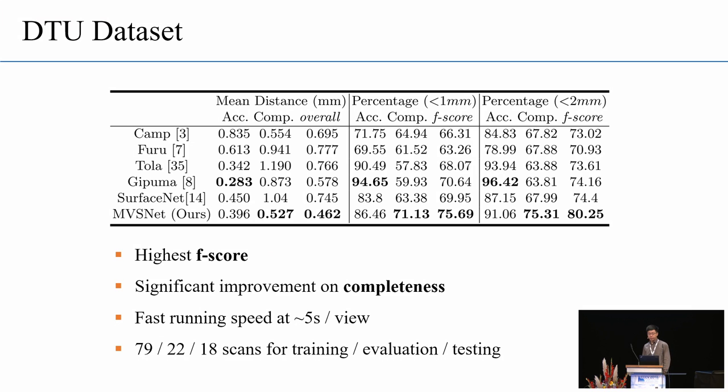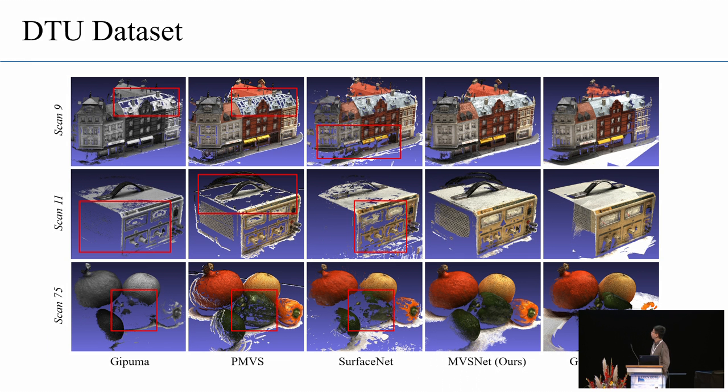For the experiment, we have trained and benchmarked MVSNet in the DTU MVS benchmark. And we split the dataset into training, evaluation, and testing sets. In the evaluation dataset, MVSNet achieves the highest F-score compared to other methods. And it is noteworthy, we got significant improvement in the reconstruction completeness. And also, our method runs in the fastest speed at around 5 seconds per view. And here is the qualitative result of MVSNet. And our method generates the most complete result compared to other methods, especially in those textureless and non-lambertian areas.